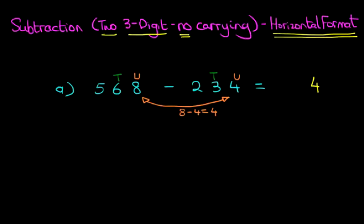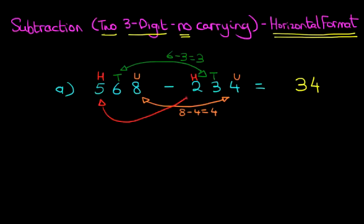Now for the tens, we've got six minus three. For the hundreds, we've got five minus two. Five minus two is three. And that's the hundreds.